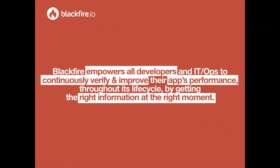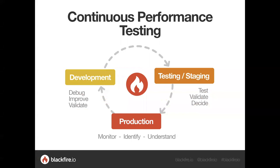Blackfire empowers teams to continuously verify and improve an application's performance, all the way from development to production. Blackfire allows you to make sure that no performance flaw will actually hit your users, and if you do find a performance issue, Blackfire lets you quickly determine what the problem is and help you find a fix. We definitely recommend putting Blackfire in production because there are a lot of types of problems that happen in production that aren't easy to detect in development. Having Blackfire already available once a problem shows up in production saves a lot of time and has less impact on the overall application.